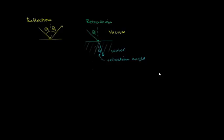Before I give you the actual equation of how these two things relate to the speed of light in these two media, I want to give you an intuitive understanding of which direction the light bends. Light can be pretty confusing — sometimes you treat it as a ray, sometimes as a wave, sometimes as a photon. But when thinking about refraction, I like to think of it as a vehicle. Let's imagine a car — we're looking at it from above. It has four wheels and it's traveling on a road.